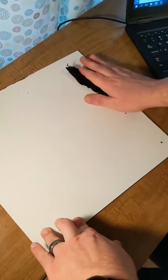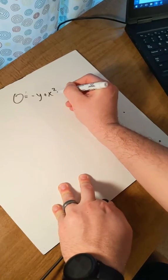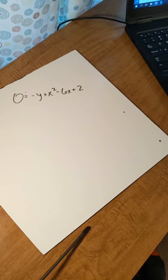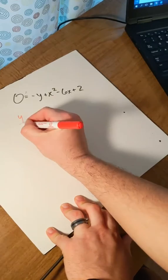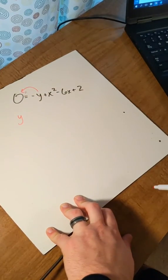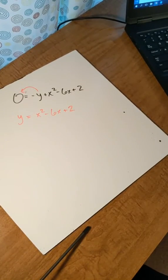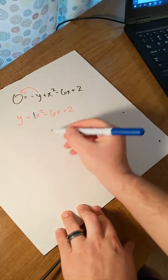Okay, so homework problems. The first problem, which has two parts to it, is: what if we have the equation 0 equals negative y plus x squared minus 6x plus 2? What we've got to do first is get the y by itself because x is squared. So we move the y over and we get y equals x squared minus 6x plus 2. Now what we need to do is factor the number out in front of the x squared term — it's technically a 1, which actually works out really nicely.